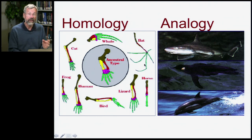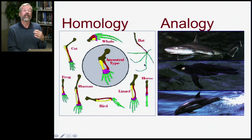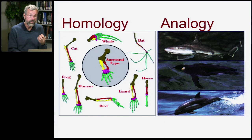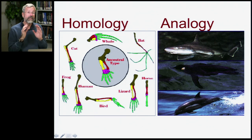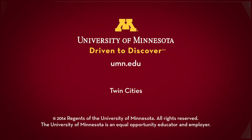On the other hand, certain traits get evolved over and over again because there's one best way to travel quickly through the water, and that's to be streamlined. So the shape of a shark is superficially rather similar to that of a penguin and a dolphin. But this is a fish, a bird, and a mammal, and these similarities have evolved repeatedly at different times.